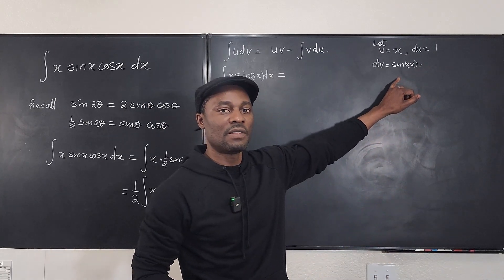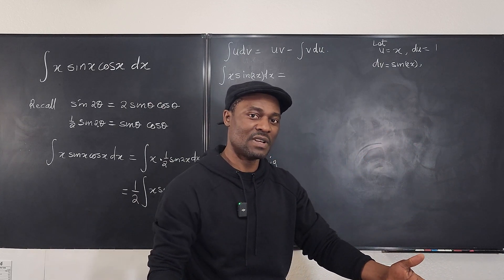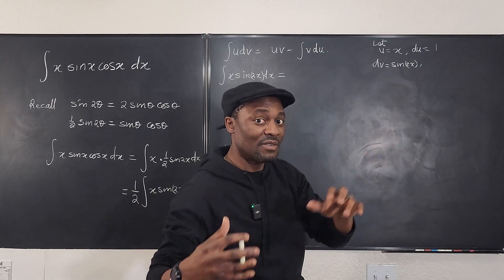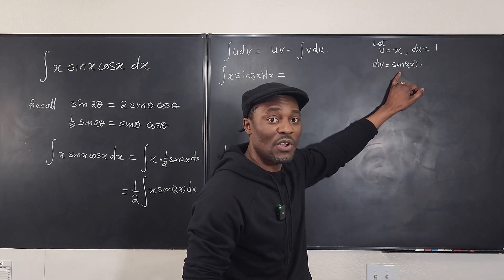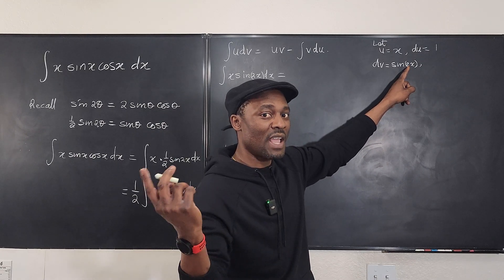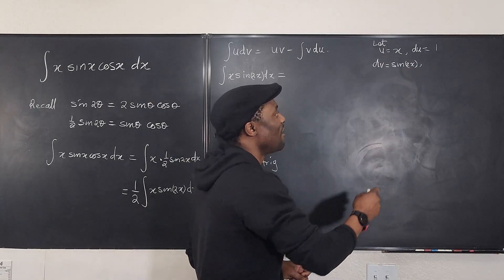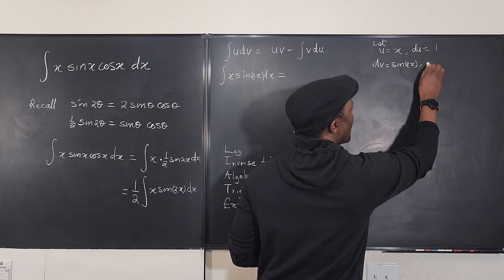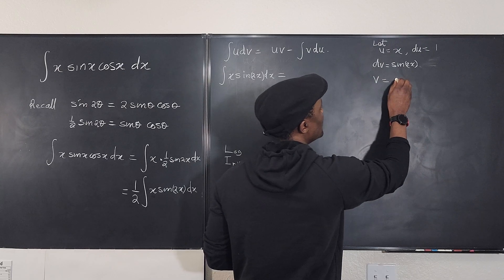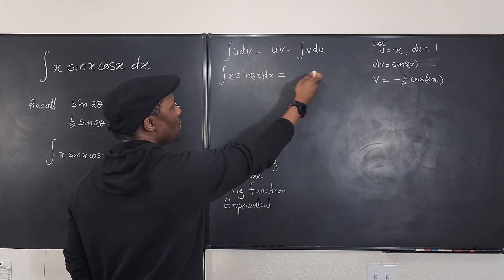Now we need to find v by integrating sin(2x). Remember: when you integrate sine, you go the opposite direction from differentiation. The derivative of cosine is negative sine, so the integral of sine is negative cosine. And instead of multiplying by the inner coefficient, you divide by it — so v = −(1/2)·cos(2x).